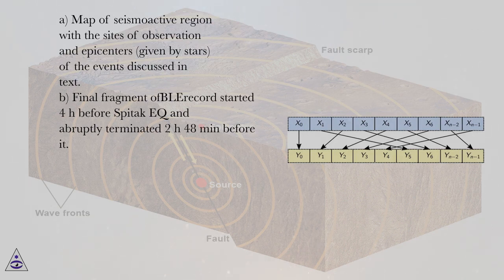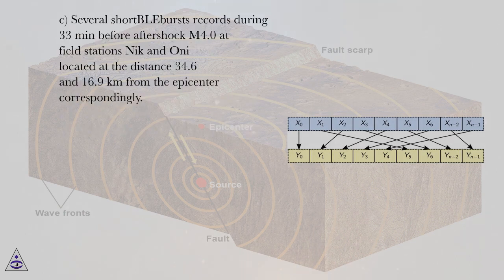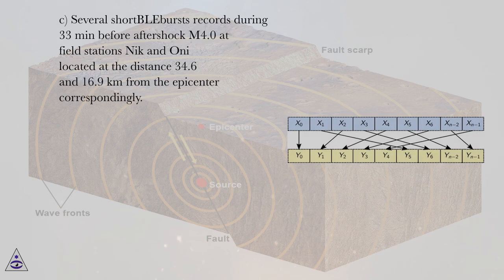Final fragment of play record started four hours before Spitak EQ and abruptly terminated 2 hours 48 minutes before it. Several short pulse bursts recorded during 33 minutes before aftershock M4.0 at field stations Nik and Oni located at the distance 34.6 and 16.9 kilometers from the epicenter correspondingly.